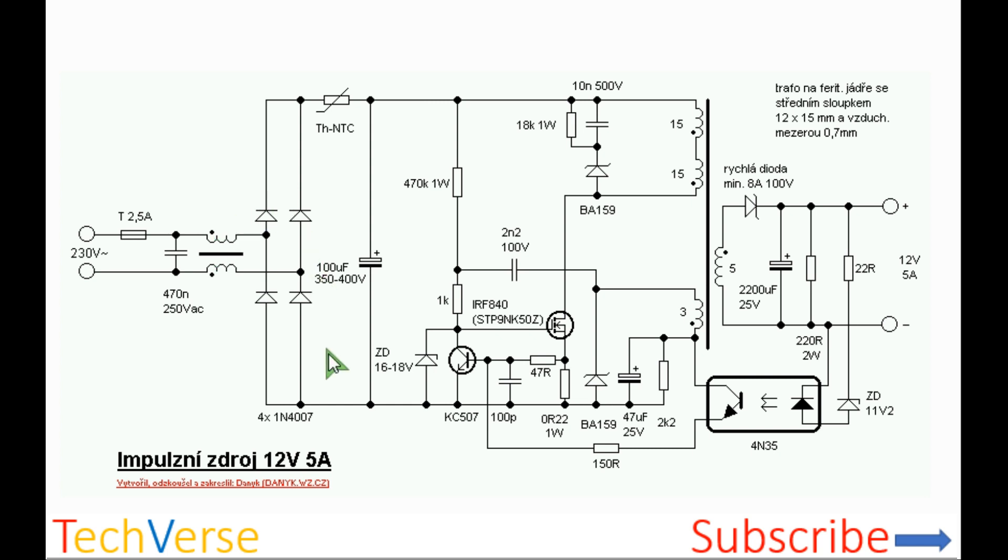It's followed by a full bridge rectifier to convert the AC to DC. There's an inrush current limiting thermistor. This limits the inrush current when the bulk input capacitor is charging, since it can cause the fuse to blow up.